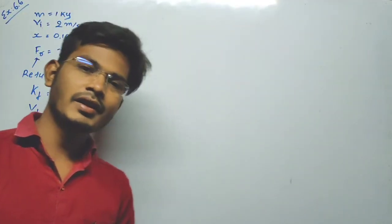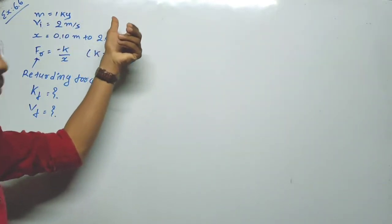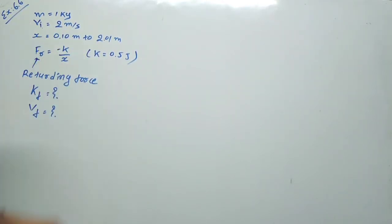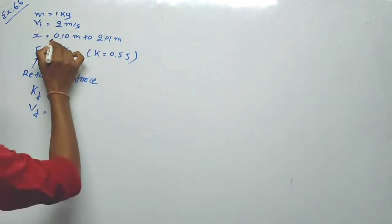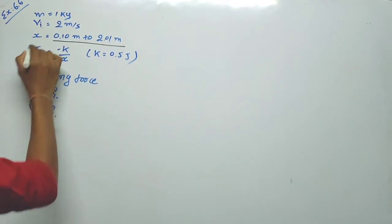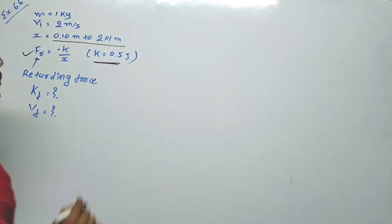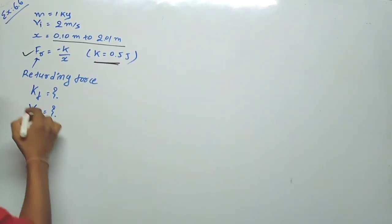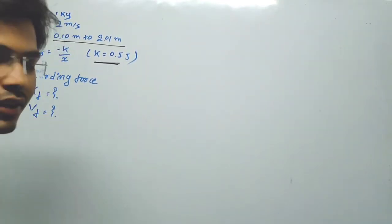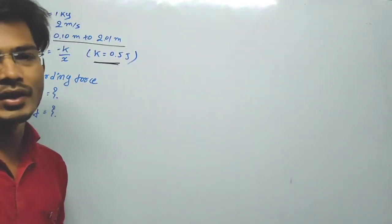So in this example, what are the given data? Mass m = 1 kg, initial velocity v_i = 2 m/s. The range is x = 0.10 m to x = 2.01 m. The retarding force F_r = -k/x where k = 0.5 J. We have to find K_f (final kinetic energy) as well as v_f (final speed).